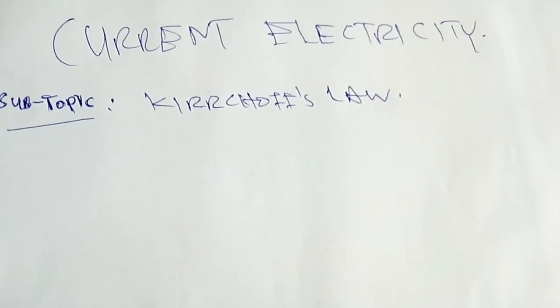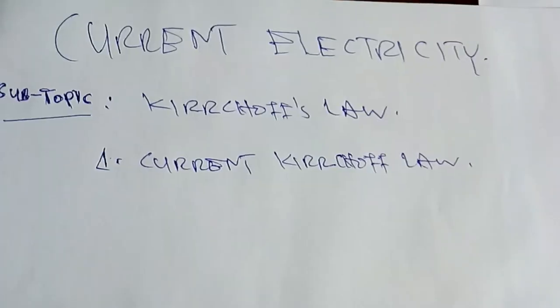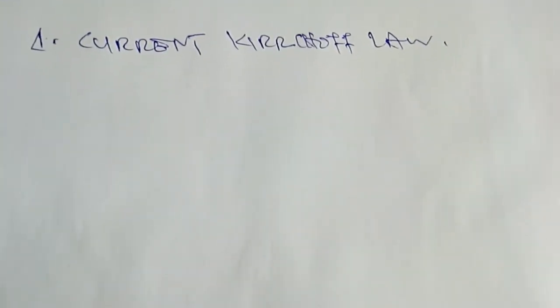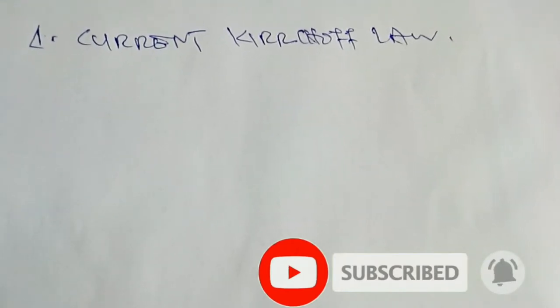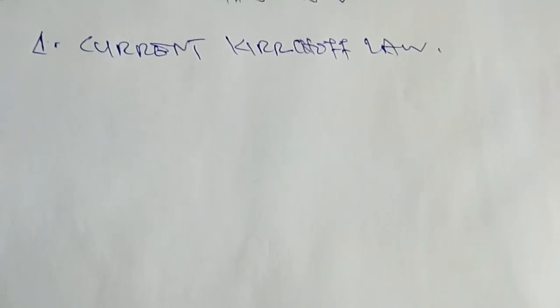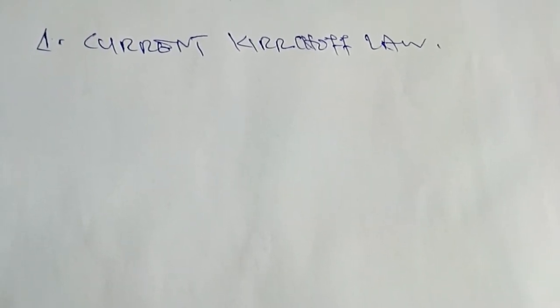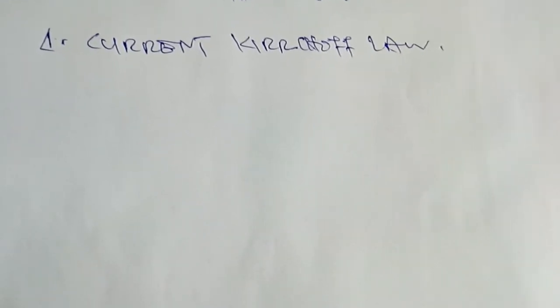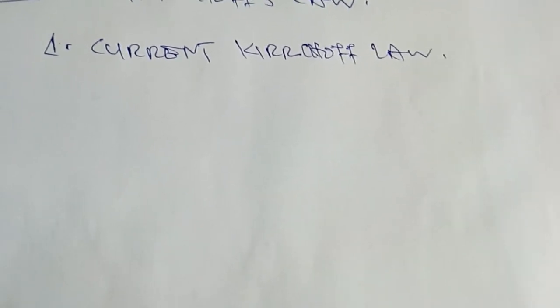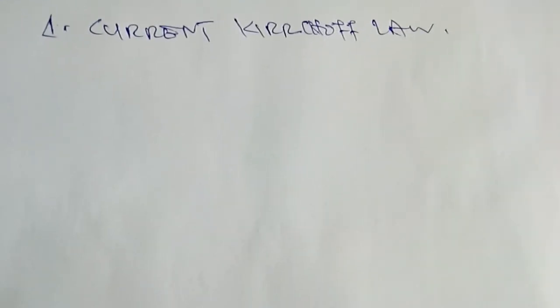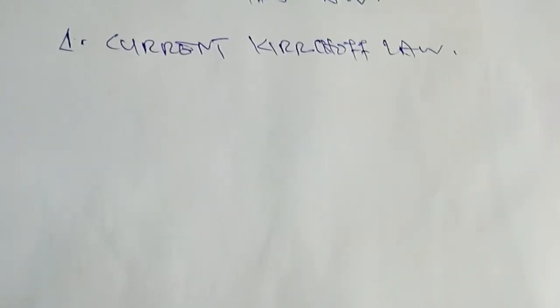Let us start with current Kirchhoff's law. When considering current Kirchhoff's law, we look at the effect of current on a circuit — how current can be determined across the circuit. This law states that the total current entering a junction is equal to the total current leaving the junction.